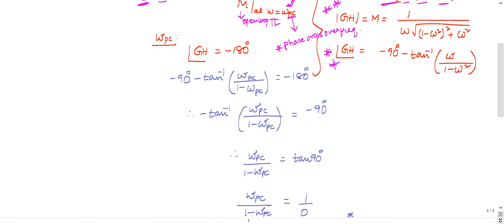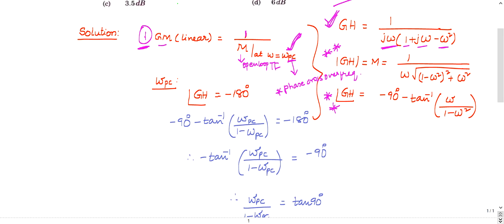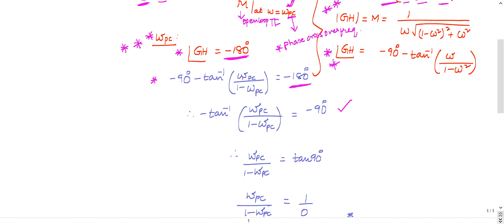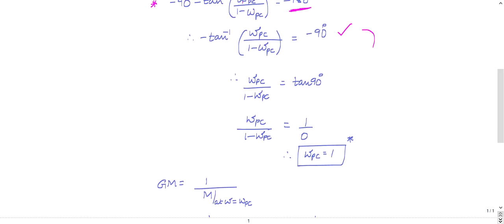Now we calculate the phase crossover frequency. The phase crossover frequency is the frequency at which the phase of the transfer function equals −180°. Substituting: −90° − tan⁻¹(ωpc / (1 − ωpc²)) = −180°. Solving this, you get the phase crossover frequency ωpc = 1.